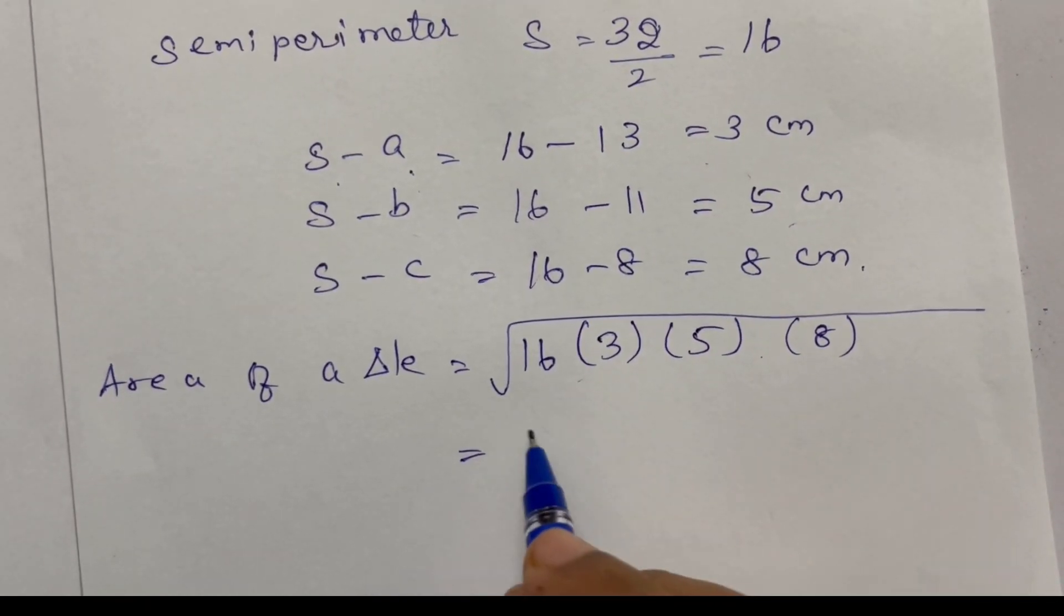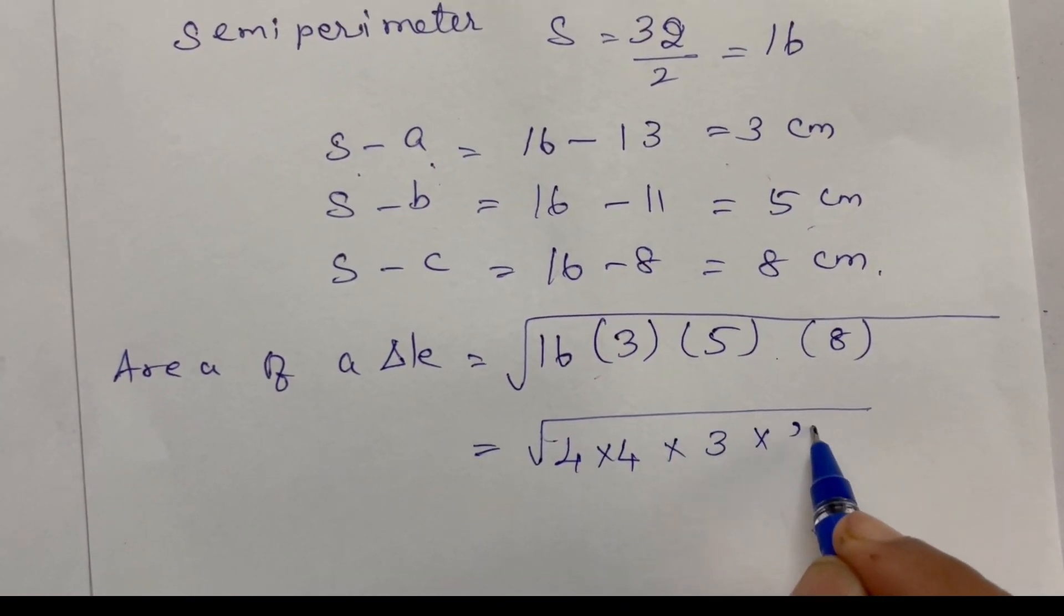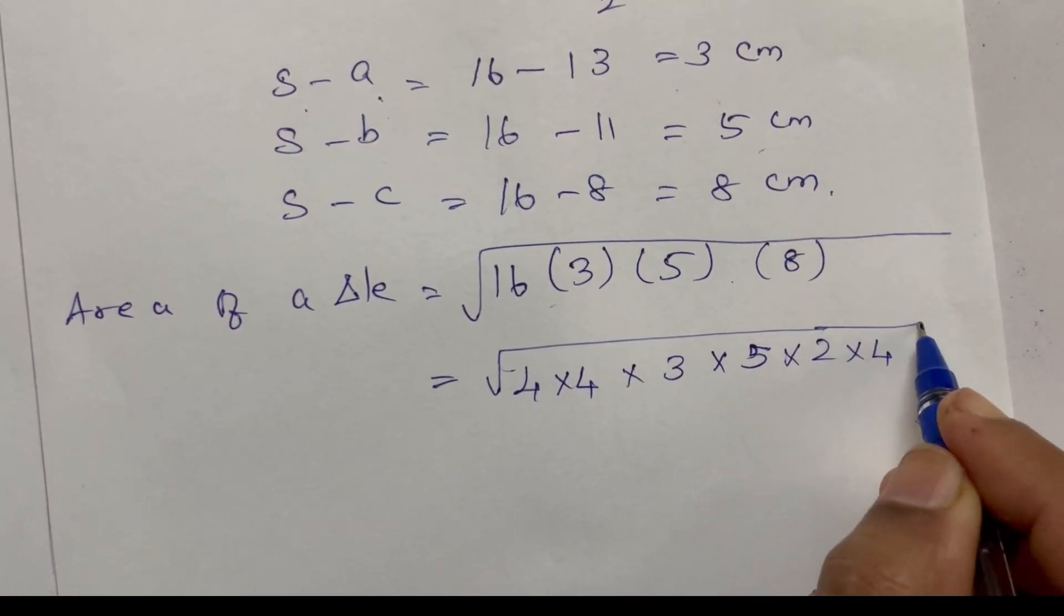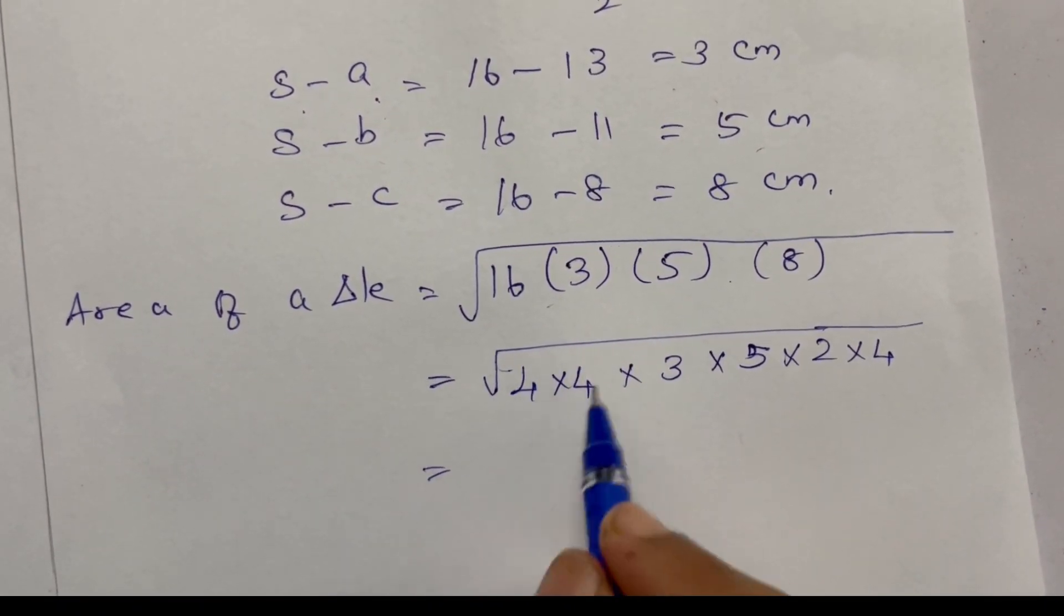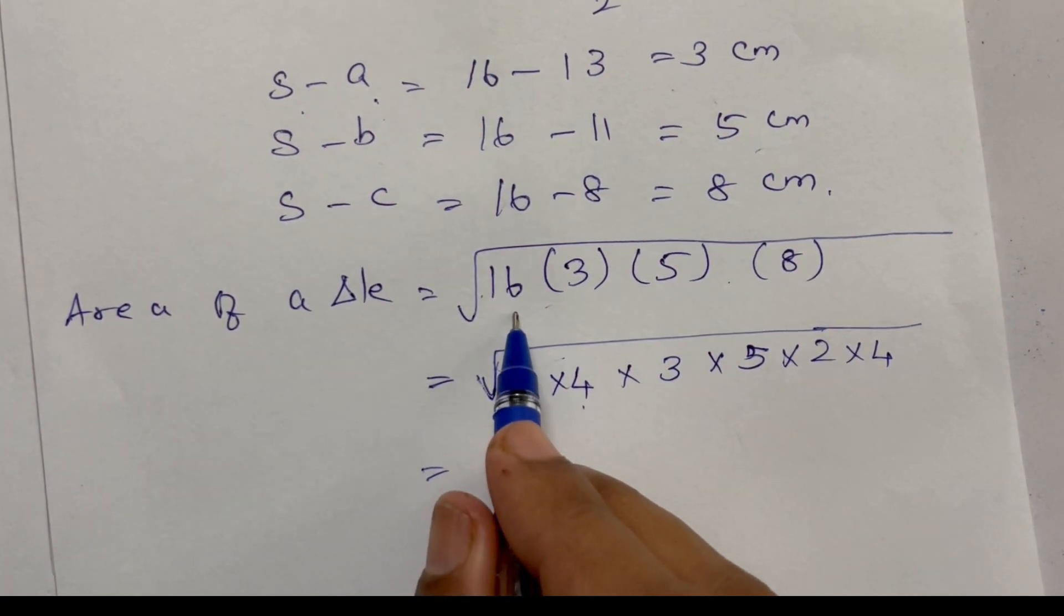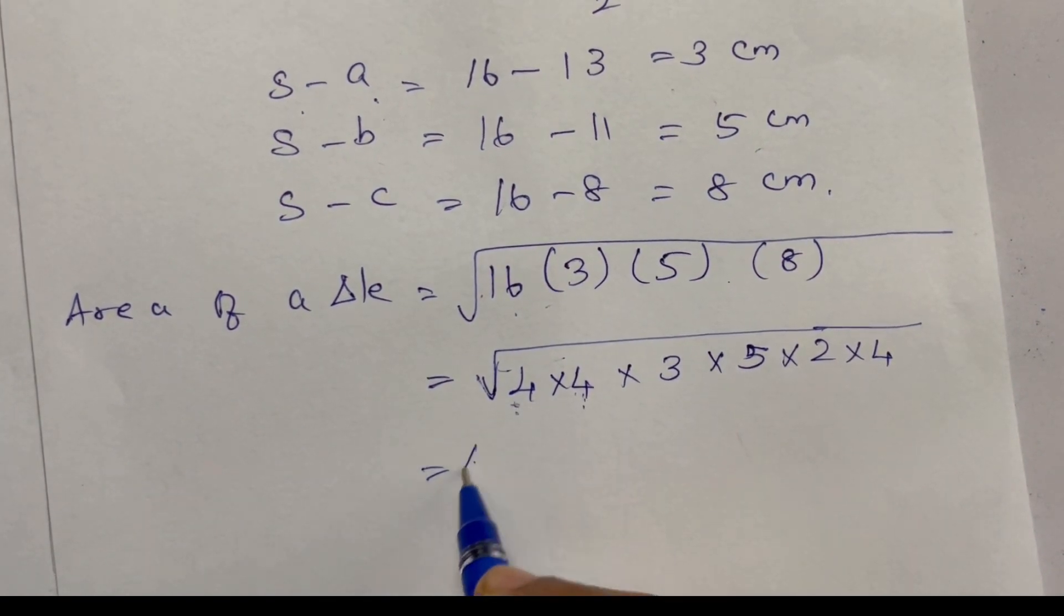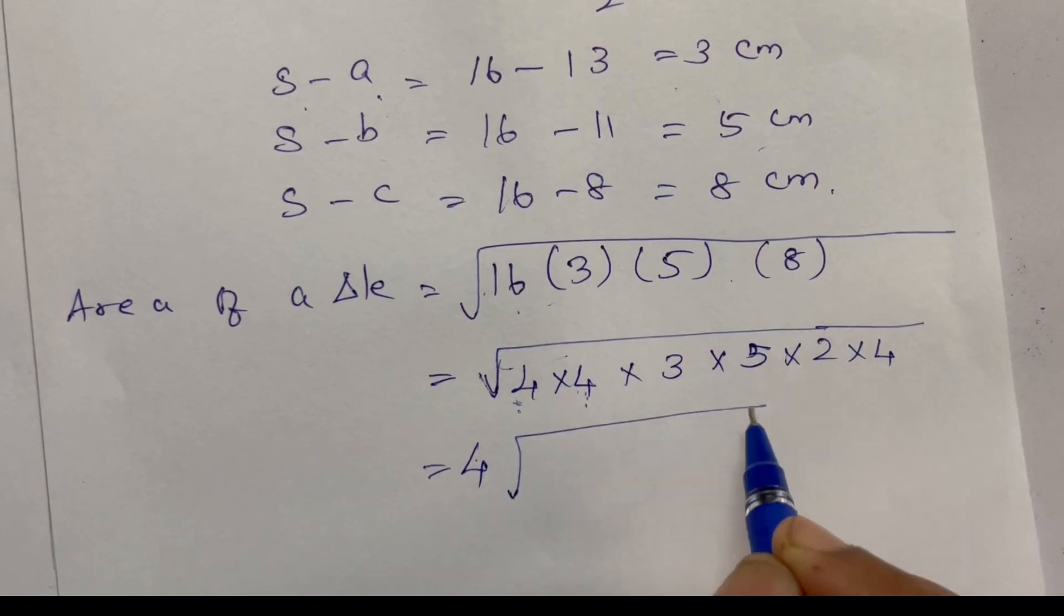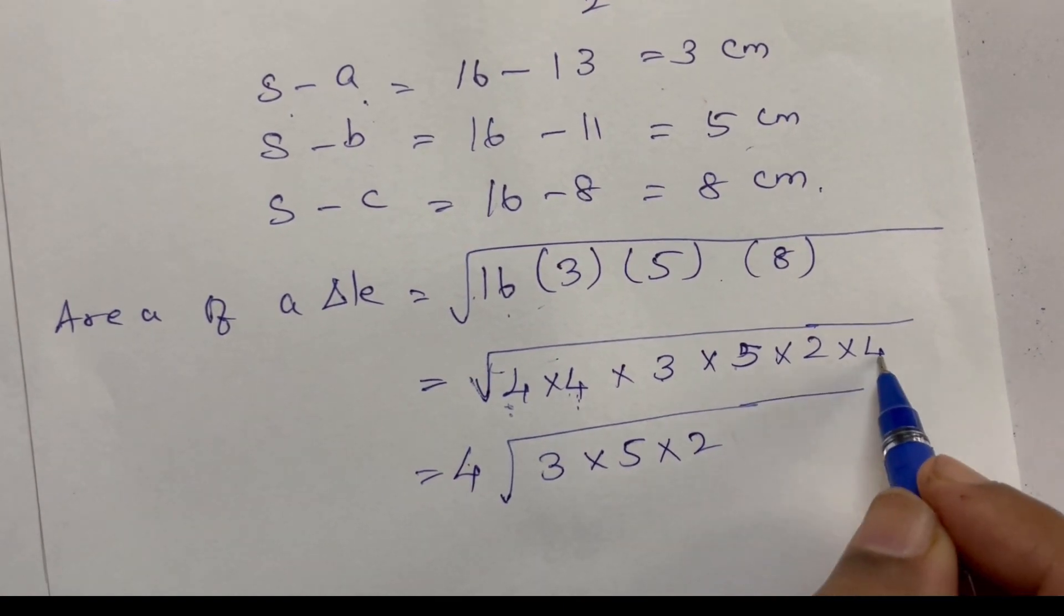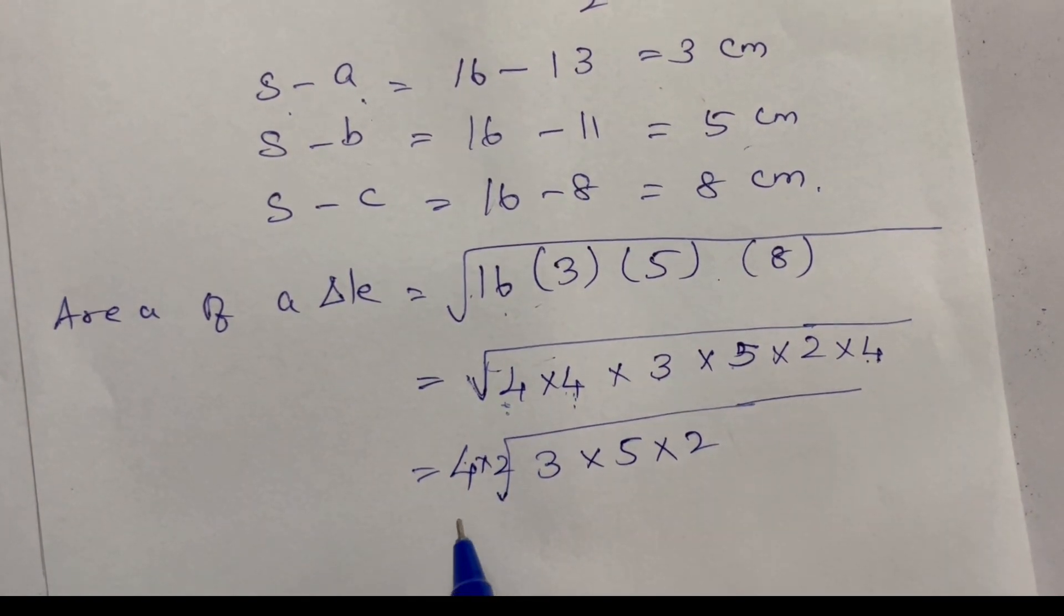Now 16 is split up. 4 into 4 is 16. 8 is 2 into 4. We can take one 4 outside the root and then within that 3 into 5 into 2 into 4. 4 root 2, that is 2 into 2.